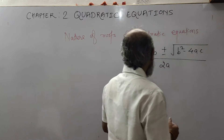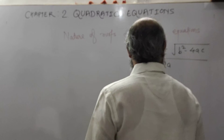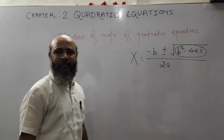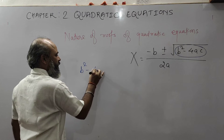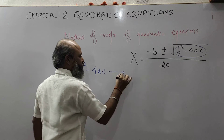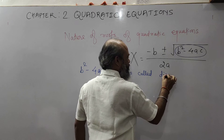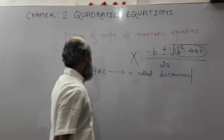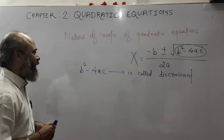To find the nature of roots of a quadratic equation, we are going to use B square minus 4AC. This B square minus 4AC is called the discriminant, and it is denoted by the letter delta.